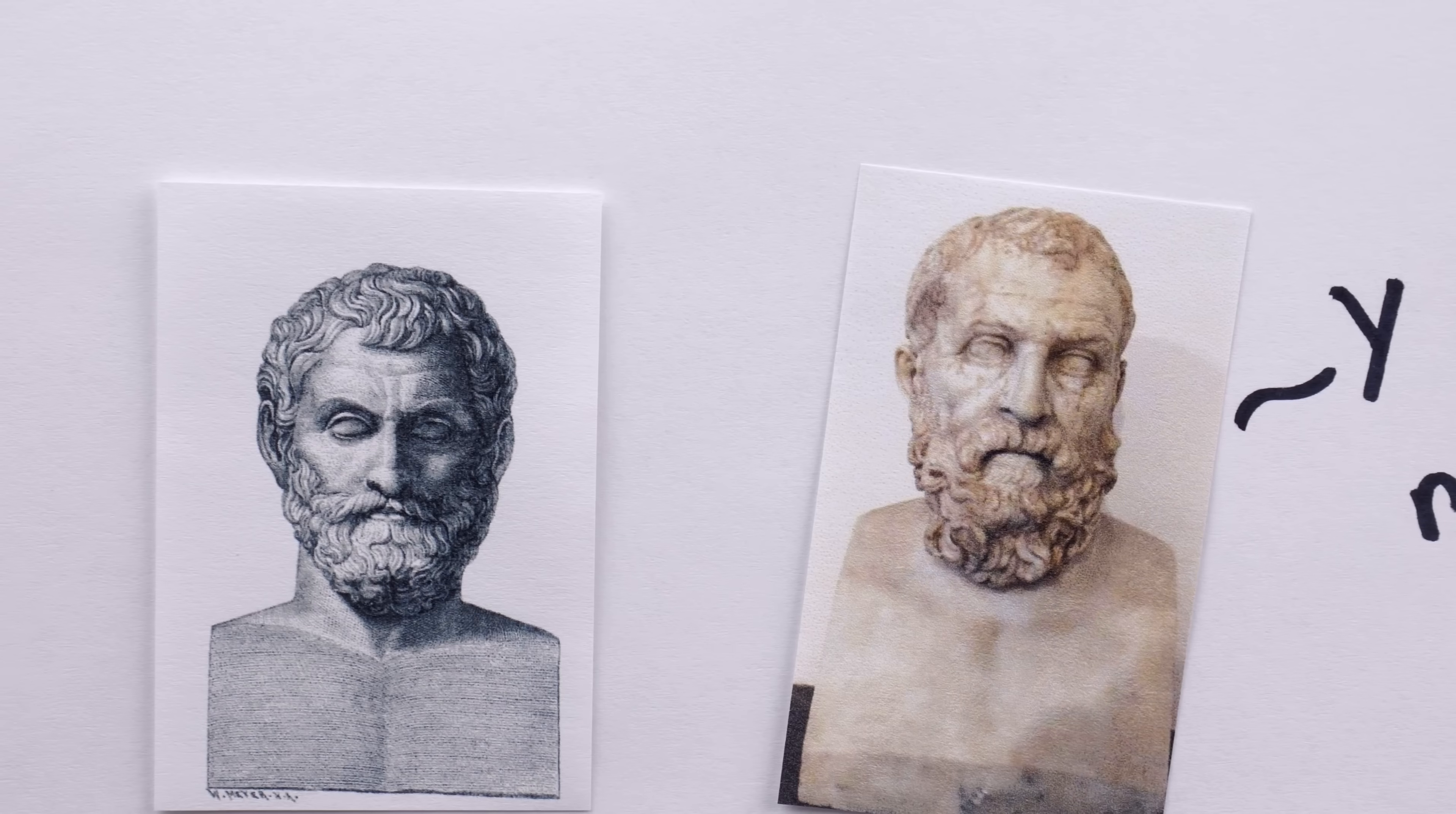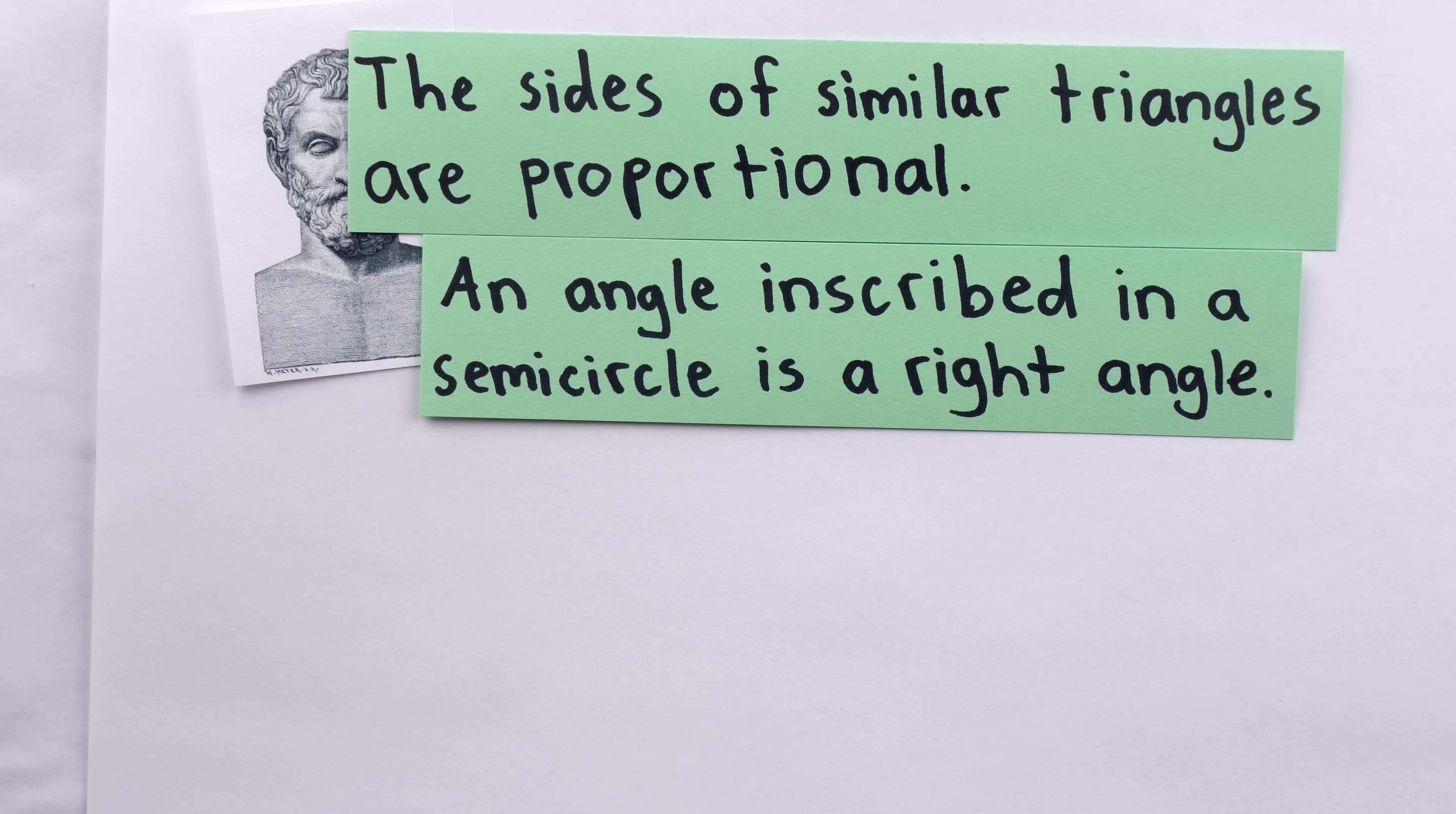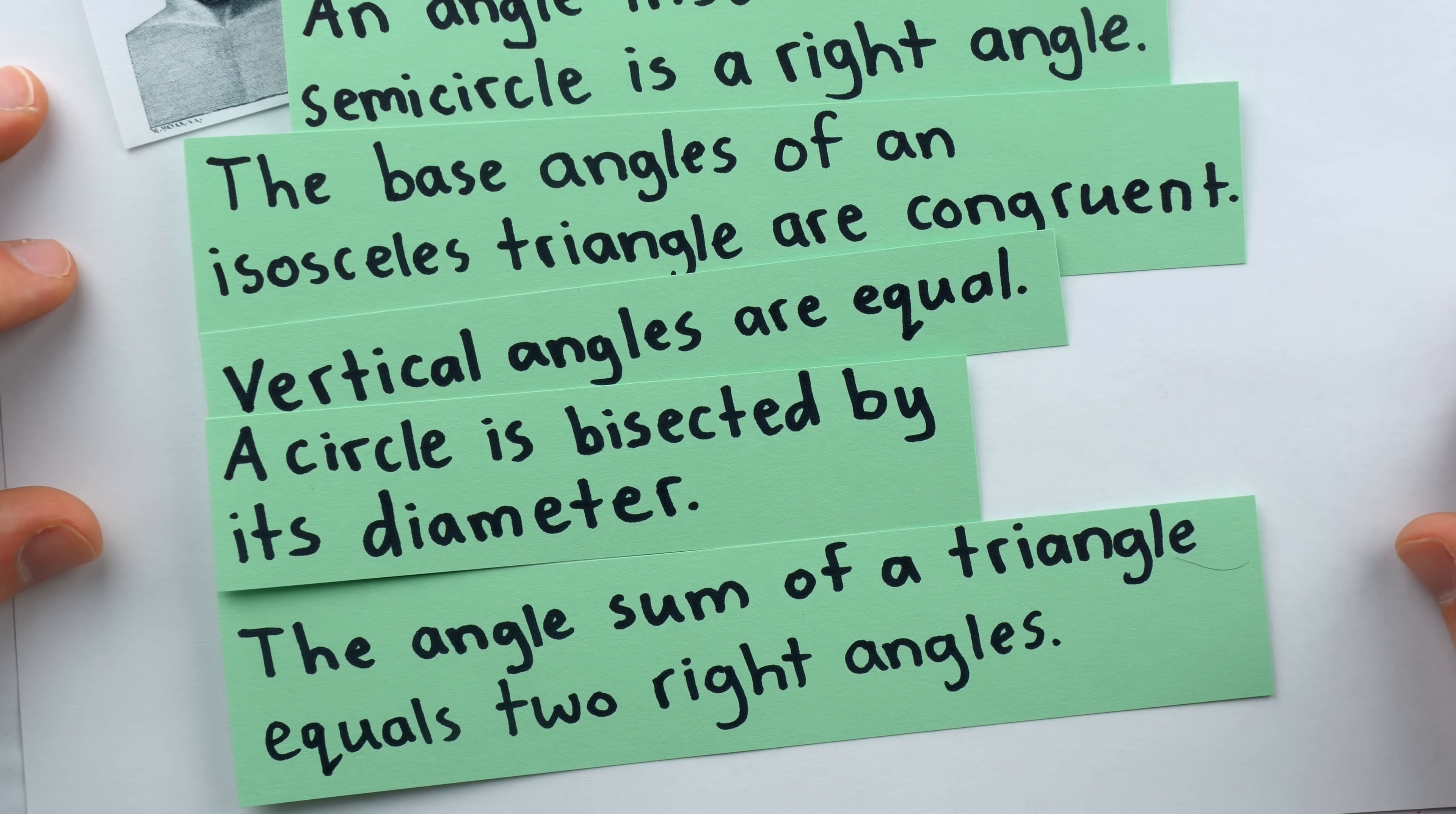Now, having seen Thales intelligent and devious in equal parts, what are some of the mathematical claims attributed to him as him being the first to prove them? It is said that he proved the sides of similar triangles are proportional, that an angle inscribed in a semicircle is a right angle, that the base angles of an isosceles triangle are congruent, that vertical angles are equal, that a circle is bisected by its diameter, and that the angle sum of a triangle equals two right angles, or 180 degrees.